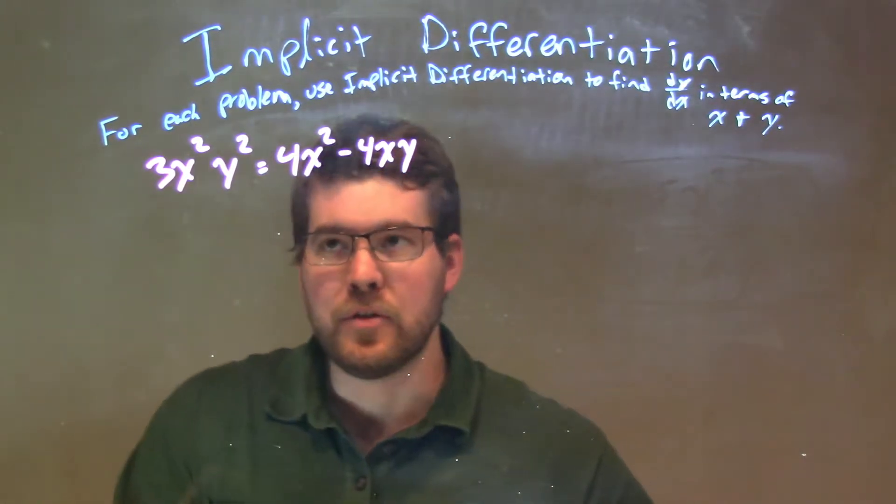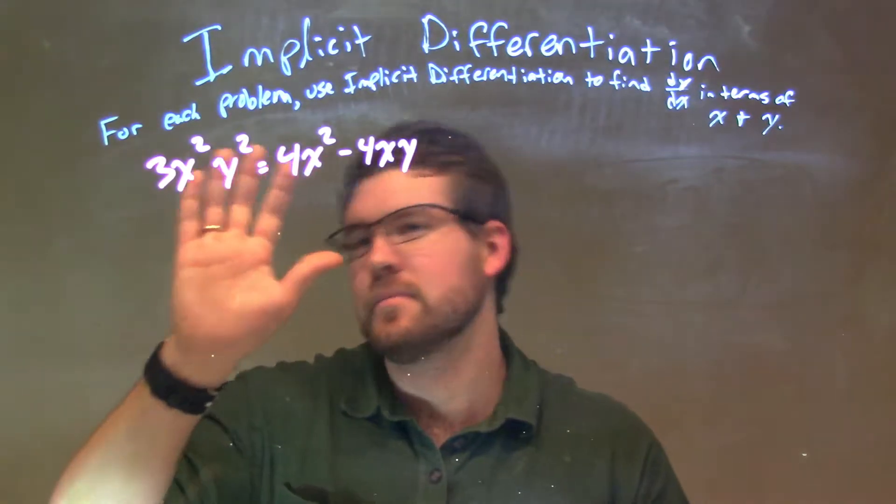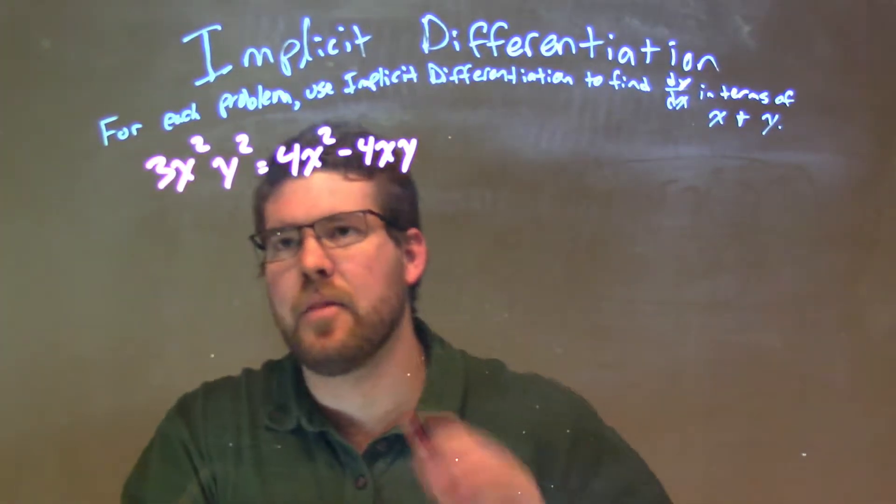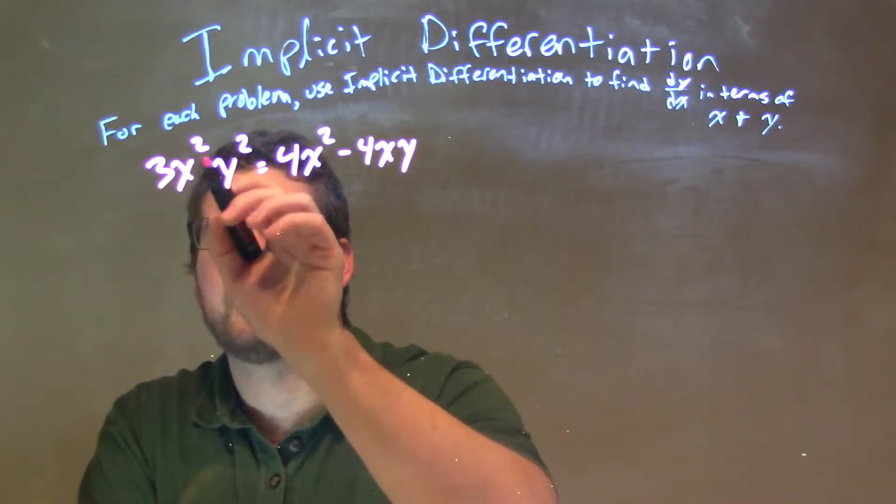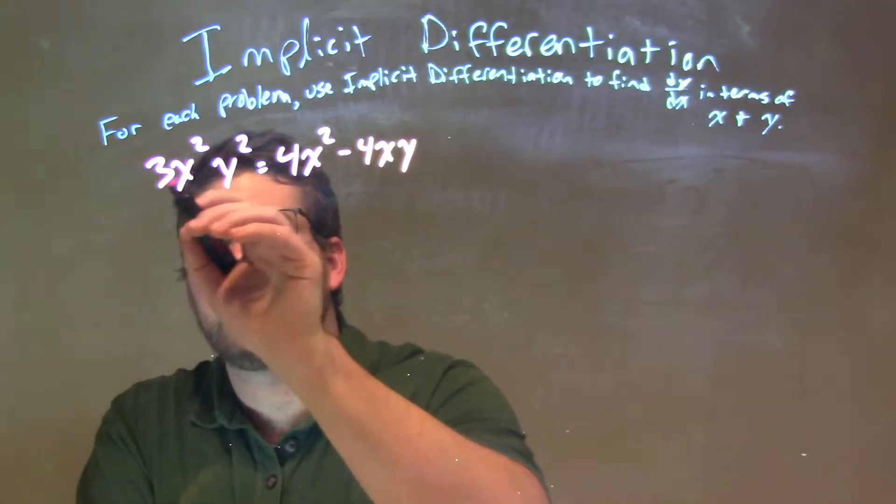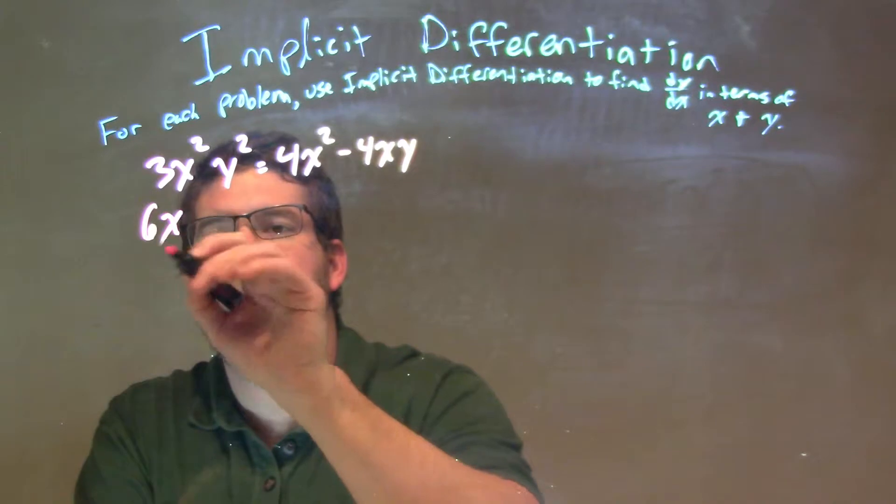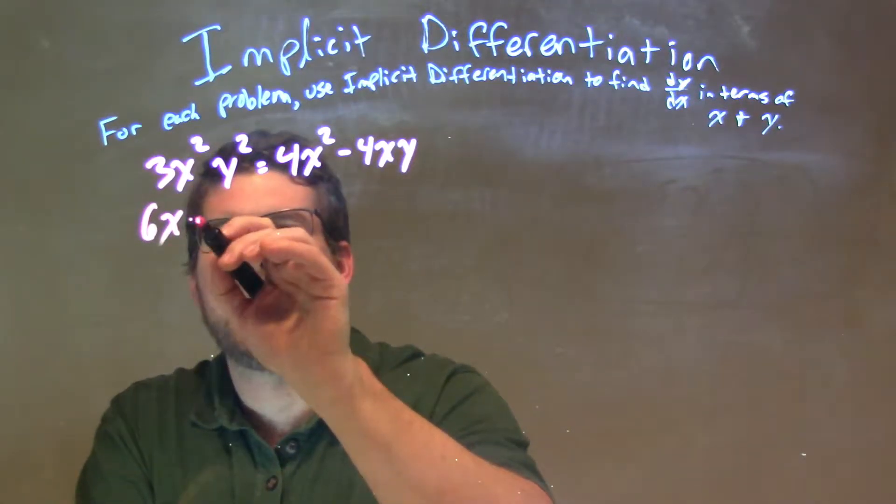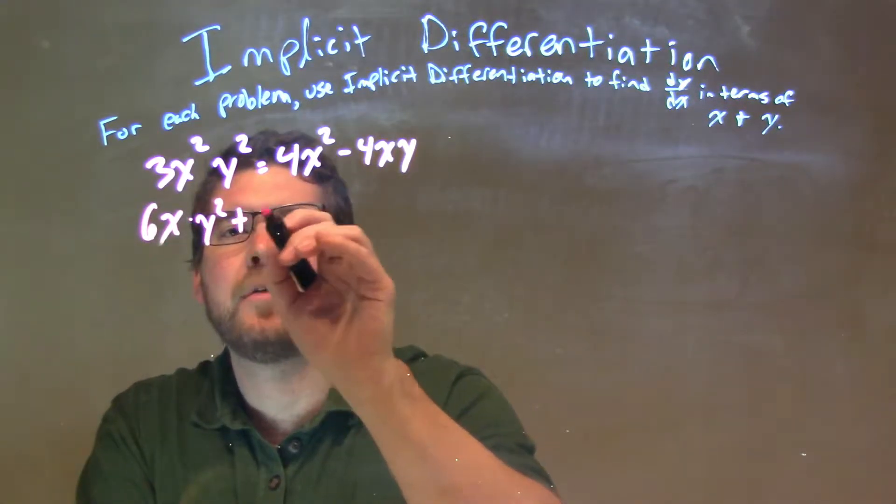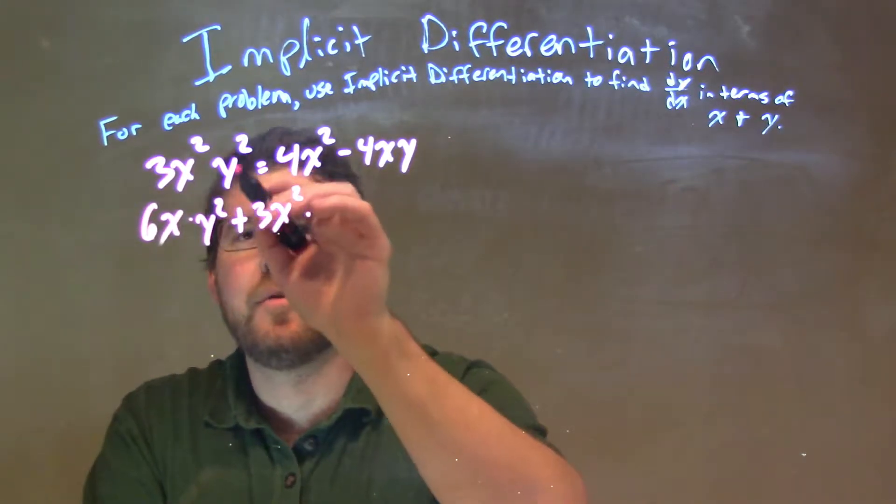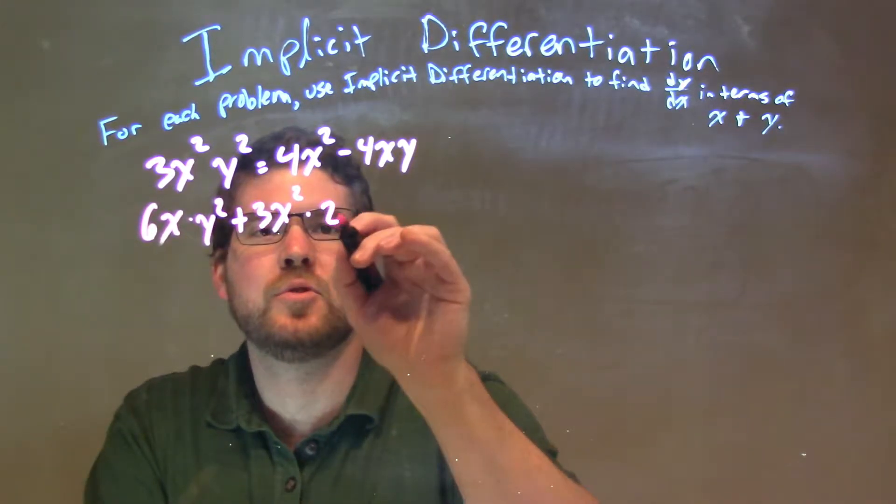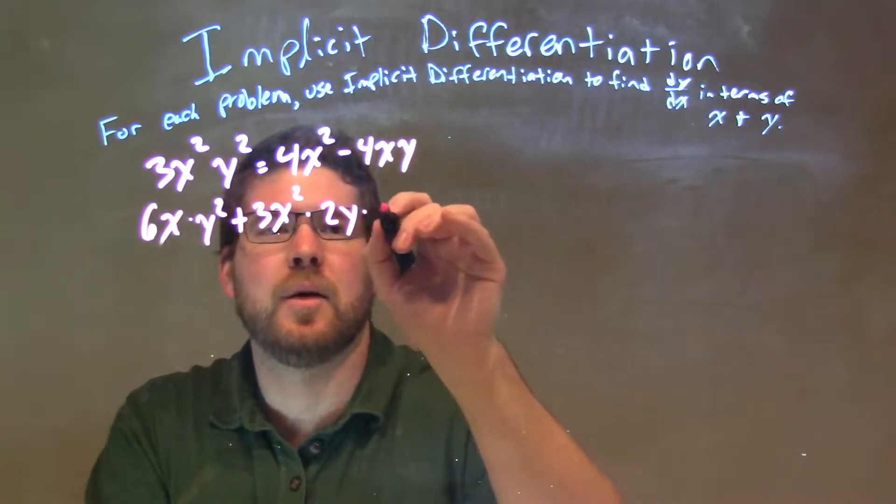Okay, so what we want to do is we're going to derive the left and right side. Now on the left-hand side, we're going to use the product rule. So we have 3x², derivative of that part 3x² is 6x times y², plus front part 3x² times derivative of y², which is 2y times dy/dx.